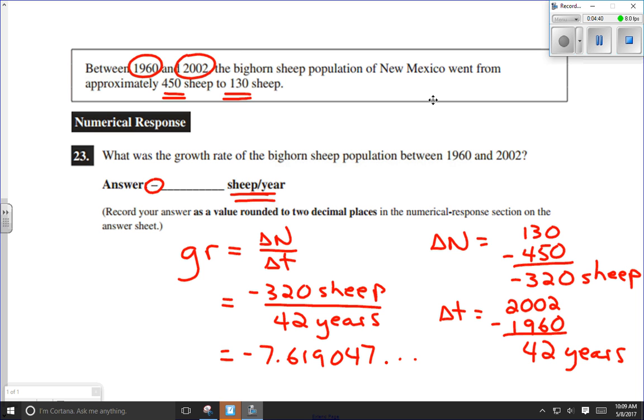So how do we write this? We want our answer rounded to two decimal places. Rounded to two decimal places, I would write this as negative 7.62 sheep per year.